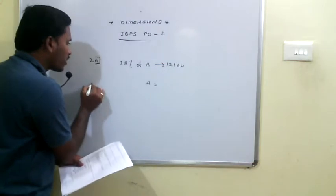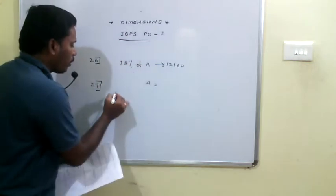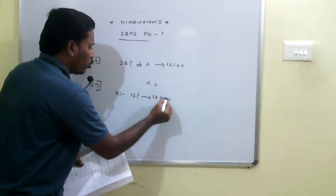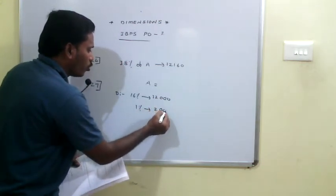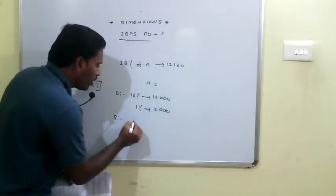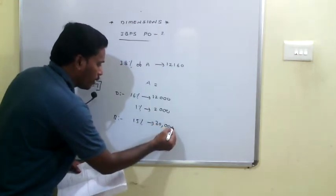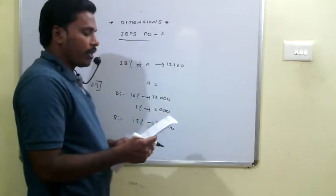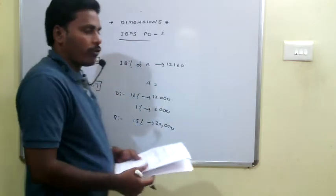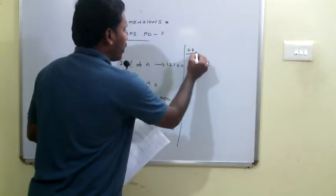Q27: If employees in department D are 32,000, then 16% corresponds to 32,000, so 1% = 2,000. Department B has 15% of employees, so 15 × 2,000 = 30,000 employees. Male employees in B are 52% as per the table, so the answer is 52% of 30,000.